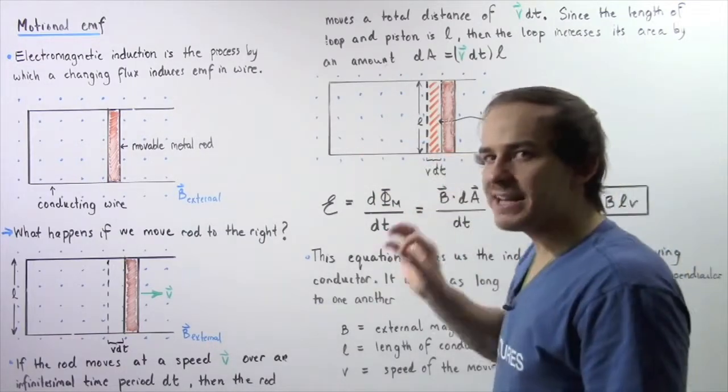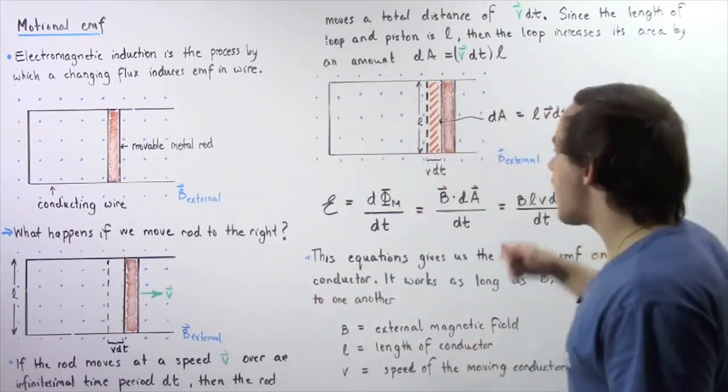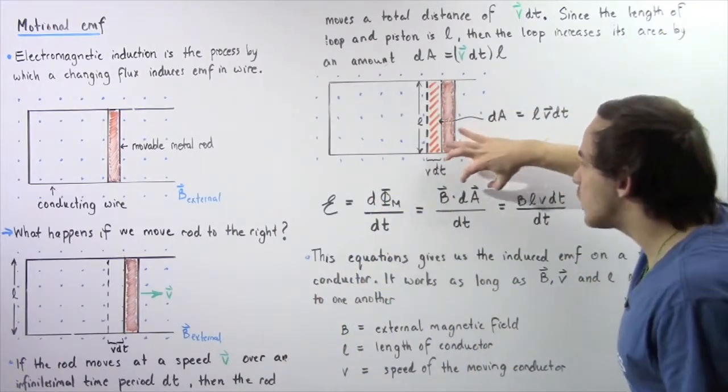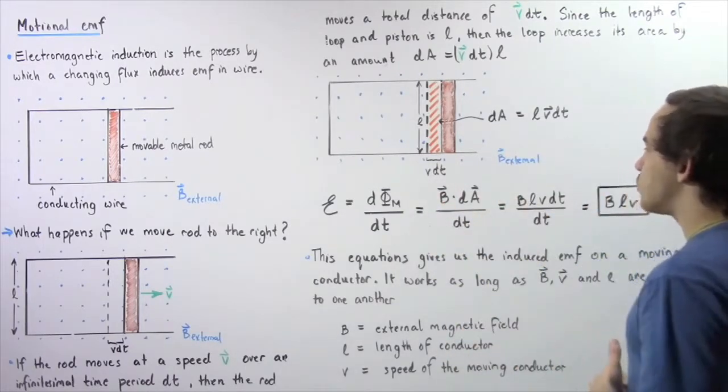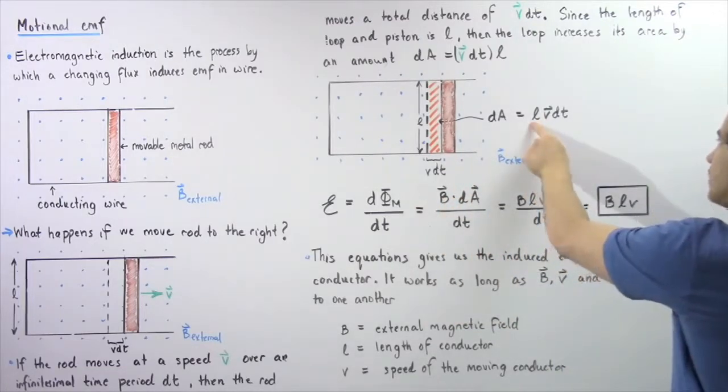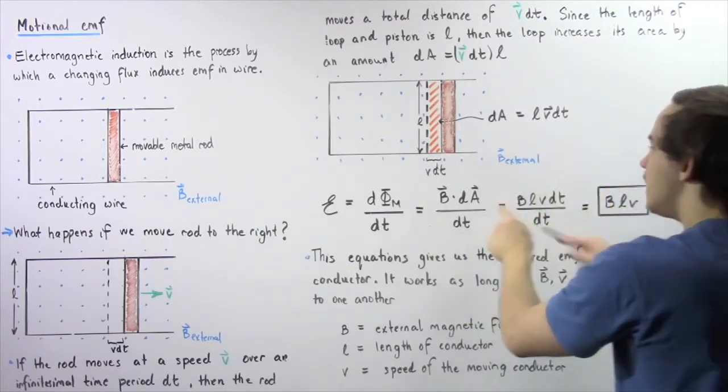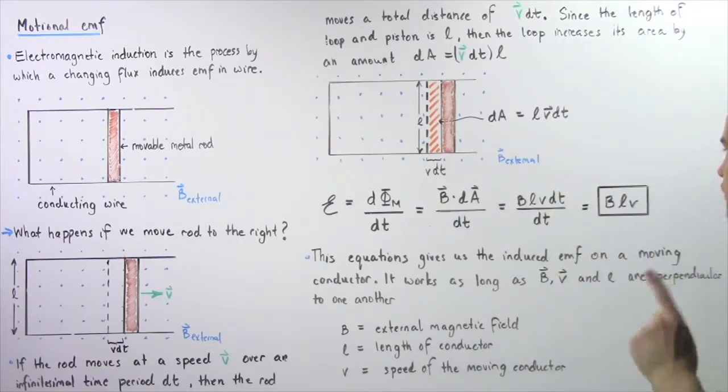Because magnetic flux is given by taking the dot product of our magnetic field B and our infinitely small change in area DA, we get the following result. Because DA is equal to L times V times DT, we replace DA with the following result.